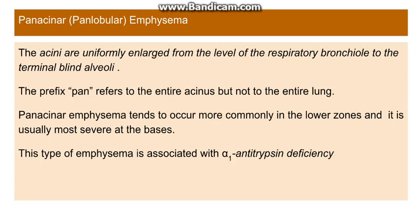The second type is panacinar or panlobular emphysema. As the name suggests, the whole acinus is uniformly enlarged, from the level of the respiratory bronchiole to the terminal blind alveoli. The prefix 'pan' refers to the entire acinus, not the entire lung. In contrast to centriacinar, panacinar emphysema is most common in the lower zones and is more severe at the base of the lung.